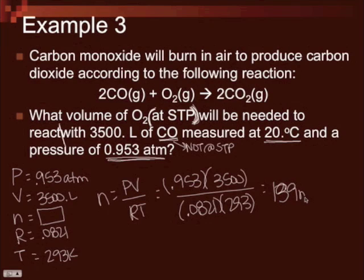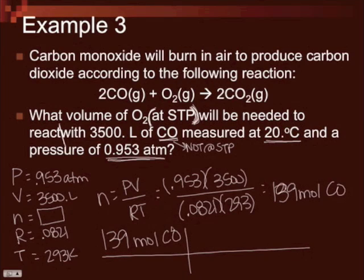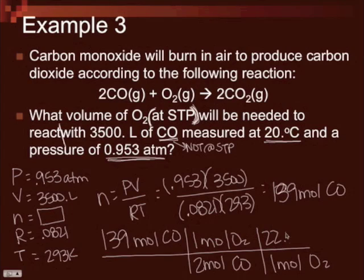139. So this is moles of CO, which we can then use to plug into the formula. So stoichiometry. So 139 moles of CO. I'm in moles, so I can just go straight into my mole ratio. Every two moles of CO, I'll need one mole of O2. And because I'm at STP, I get to use 22.4. So each mole of O2 will have a volume of 22.4 liters. So you plug this in, 139 times 22.4 divided by 2 gives you 1,552.98. I'm allowed, let's look, three sig figs. So 1,550. 1,550 liters of O2.